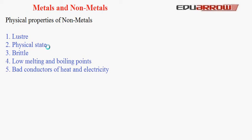3. Brittleness: Non-metals are neither malleable nor ductile — they can neither be drawn into wires nor into sheets. When they are hammered, they break into powder; this property is known as brittleness. So non-metals are brittle.